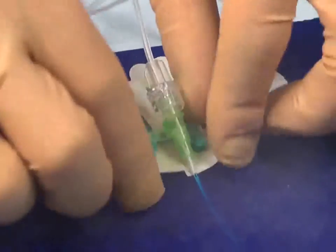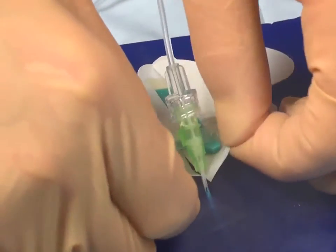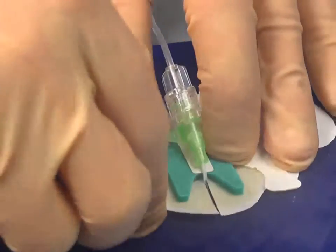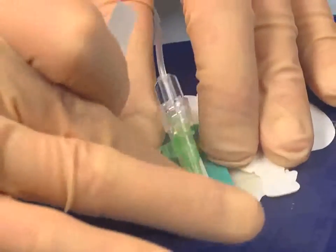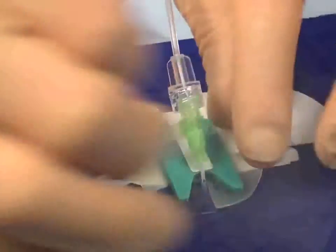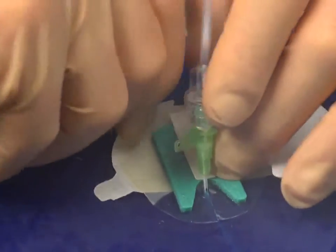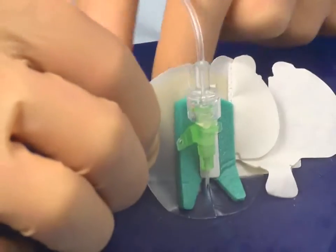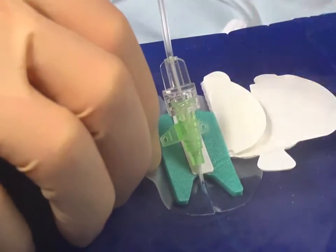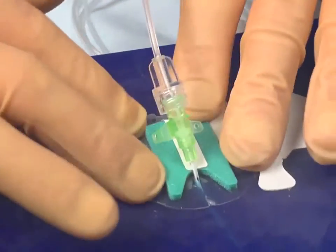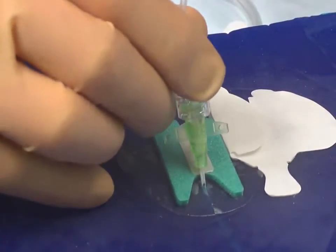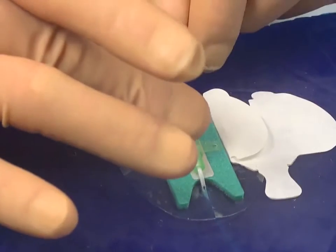An alternative fixation device is the Pajunk fixer-cath. Firstly, insert the fixer-cath beneath the e-catheter. Remove the front paper flaps and stick down the fixer-cath. Carefully lift the rear, remove the paper flap and stick down the rear of the fixer-cath. Peel off the centre strip and apply the wings of the e-catheter to the fixer-cath.